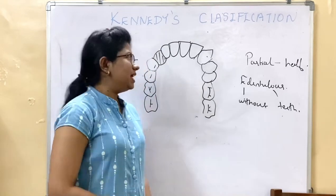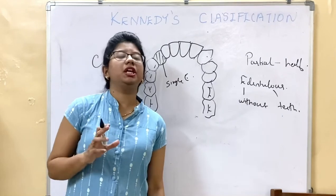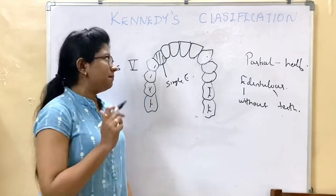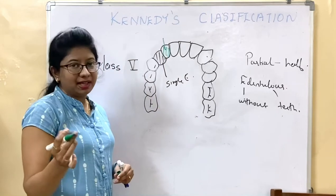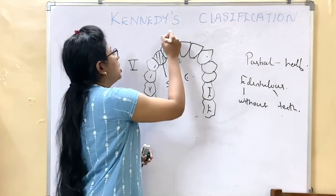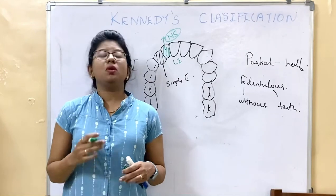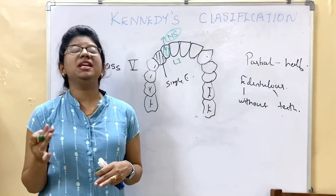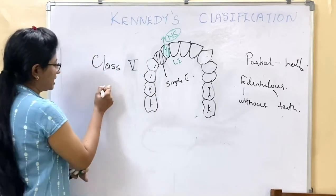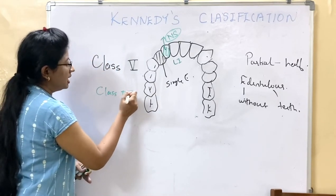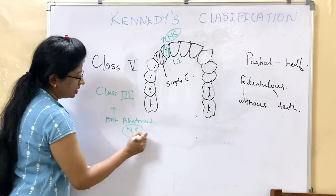Class 5 describes a single edentulous area with teeth present anterior as well as posterior to it — the same as Class 3. The difference is that the anterior abutment, for example a lateral incisor, is not appropriate or strong enough for support. So whenever the anterior abutment is not adequate for support, it is classified as Class 5. Basically, Class 5 is Class 3 plus an anterior abutment that is not supportive.